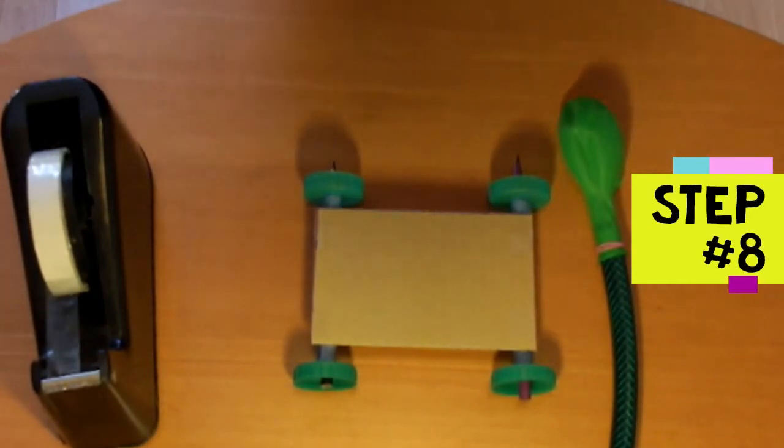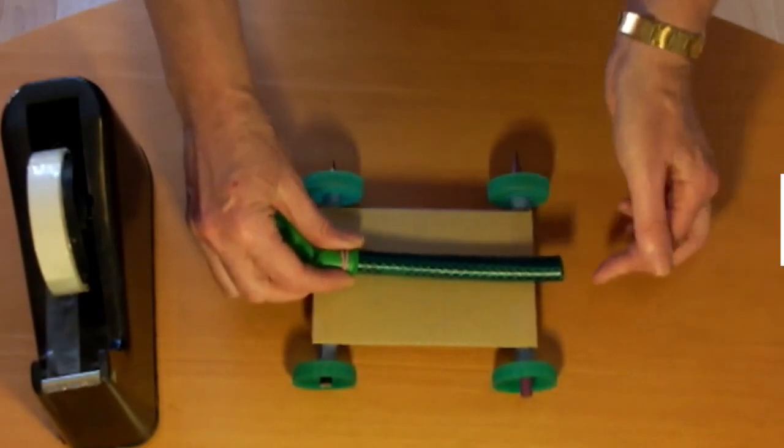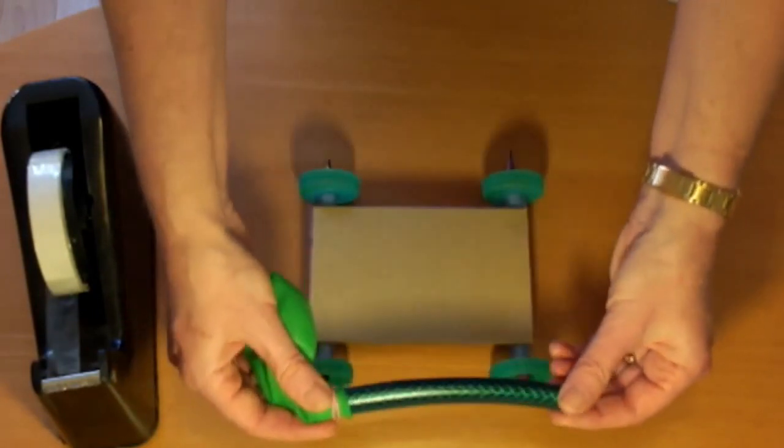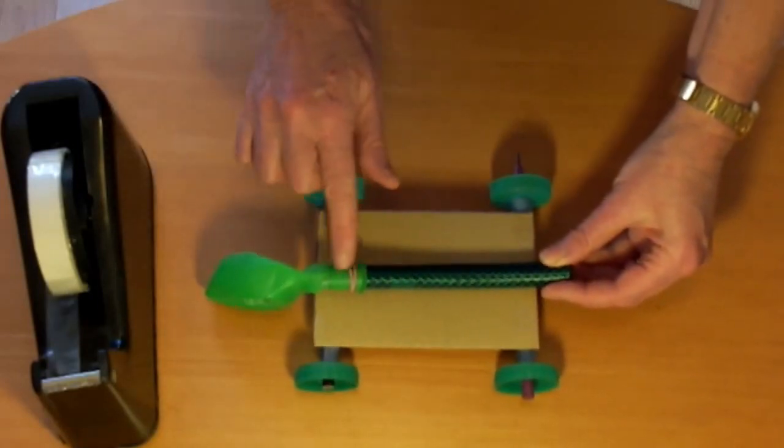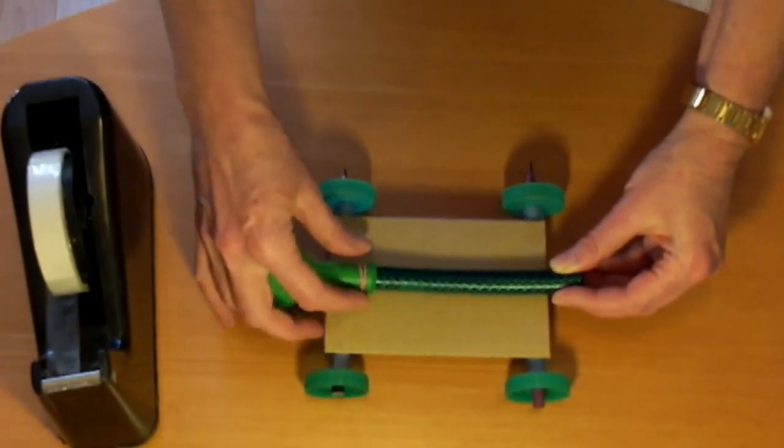Step eight is to attach the tube. You need to tape the tube to the top of the base. Make sure this end is sticking out so that you can blow into it. If the tube is curved like this garden hose, make sure this end is curving upwards. This stops the balloon rubbing on the floor as much, so the buggy will go faster.